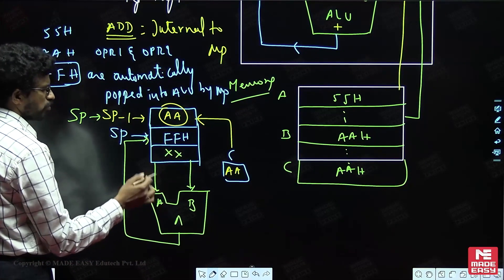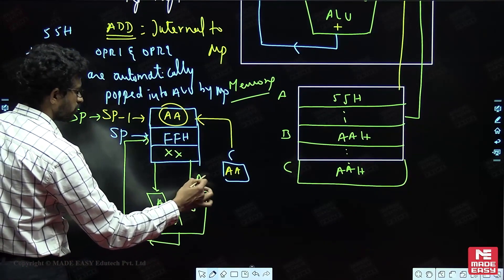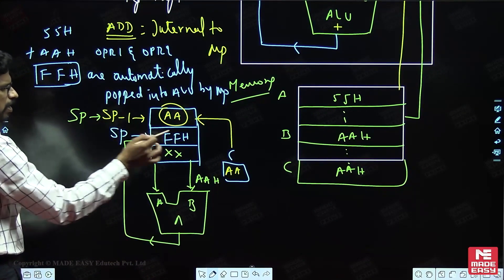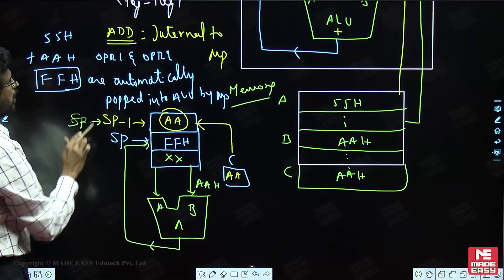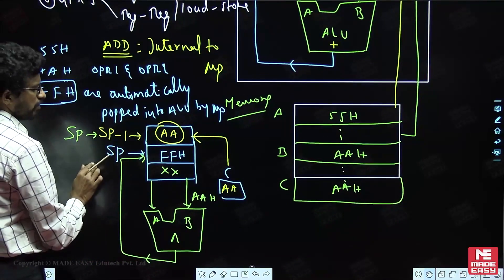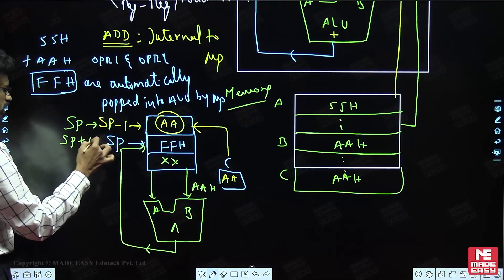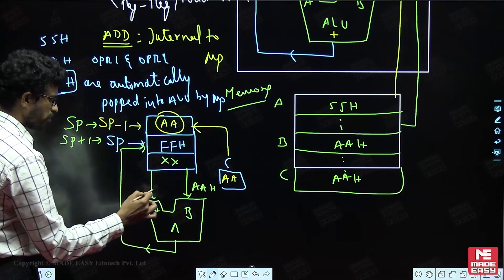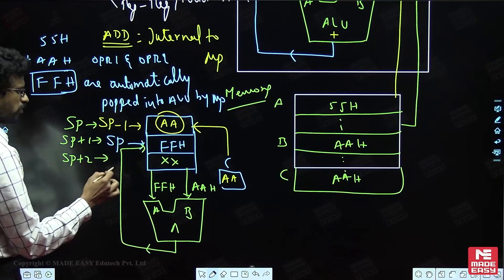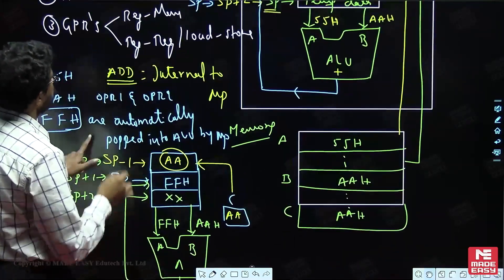For the AND operation: the first pop brings AAH (SP becomes SP+1), and the second pop brings FFH (SP becomes SP+2). AND is performed between FF (11111111 binary) and AA (10101010 binary). Since one input is all ones (FF), the output equals the second input. Hence the program completes with the AND result stored at the top of the stack.